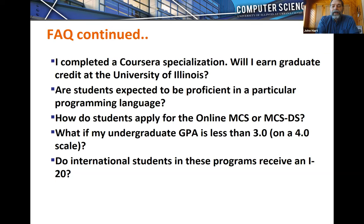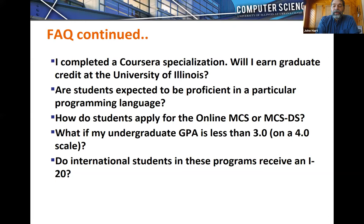If your undergraduate GPA is less than 3.0 on a 4.0 scale, you are still welcome to apply. Emphasize in your resume and application statement any successes in computing. We look at GPA under a variety of metrics for holistic consideration: your final GPA, your GPA for the last two years, your GPA in computing courses, and your GPA for any subsequent coursework past your degree.